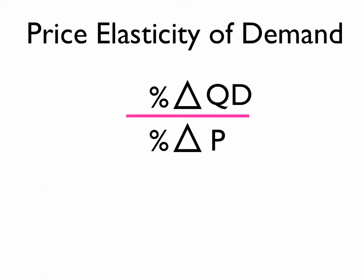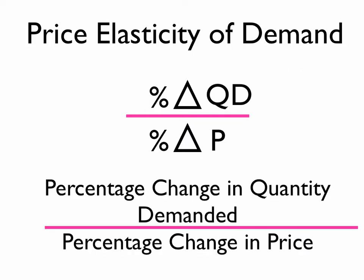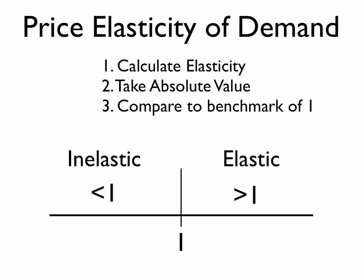Note that it's quantity demanded, not demand. That would be a movement up and down the demand curve as price changes. So we take a couple of steps to do our elasticity demand. First, we calculate the elasticity using the formula. The second step is to take the absolute value of the coefficient. And the third step is to compare that value to a benchmark number of 1. If that value is greater than 1, then the relationship is elastic. If it's less than 1, then it would be considered price inelastic.